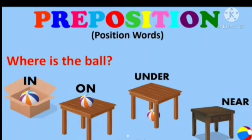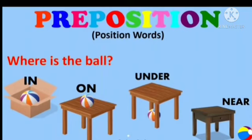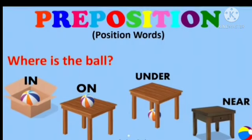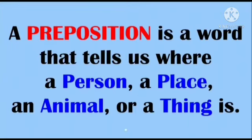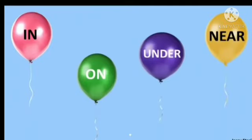By seeing the position where the ball lies, we were able to identify: the ball is inside a box, the ball is on the table, the ball is under the table, and the ball is near the table. So these words — in, on, under, near — these are prepositions. A preposition is a word that tells us where a person, a place, an animal, or a thing is.